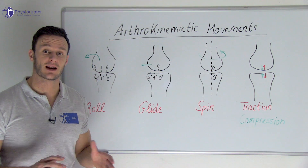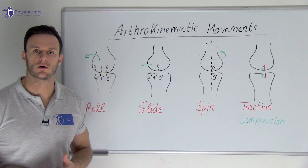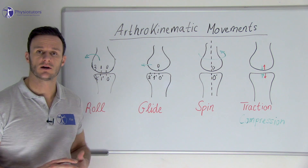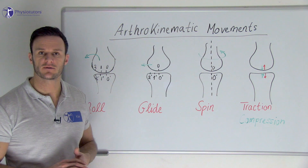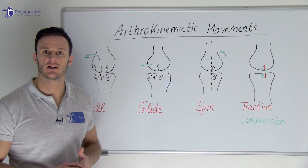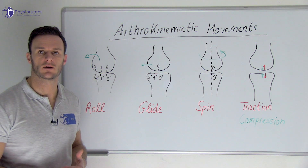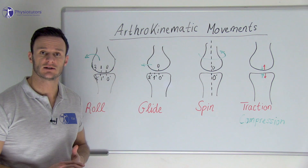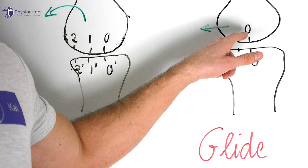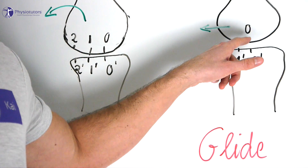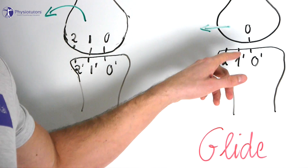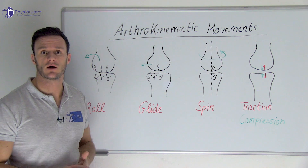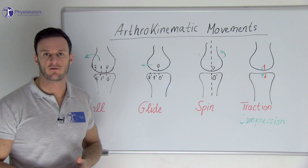In case of a gliding, also called sliding movement, which is a translation, one point on one of the surfaces is contacting new points on the opposing surface. So in this case, point zero on the convexity will make contact with point zero, one and two and so on on the concave part.